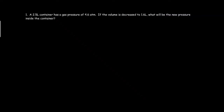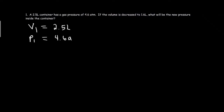Here is an example of how to solve Boyle's Law. Number 1: a 2.5-liter container has a gas pressure of 4.6 atm. If the volume is decreased to 1.6 liters, what will be the new pressure inside the container? V1 equals 2.5 liters, P1 equals 4.6 atm. The volume is decreased and the new volume V2 is 1.6 liters. We need to find the new pressure P2.